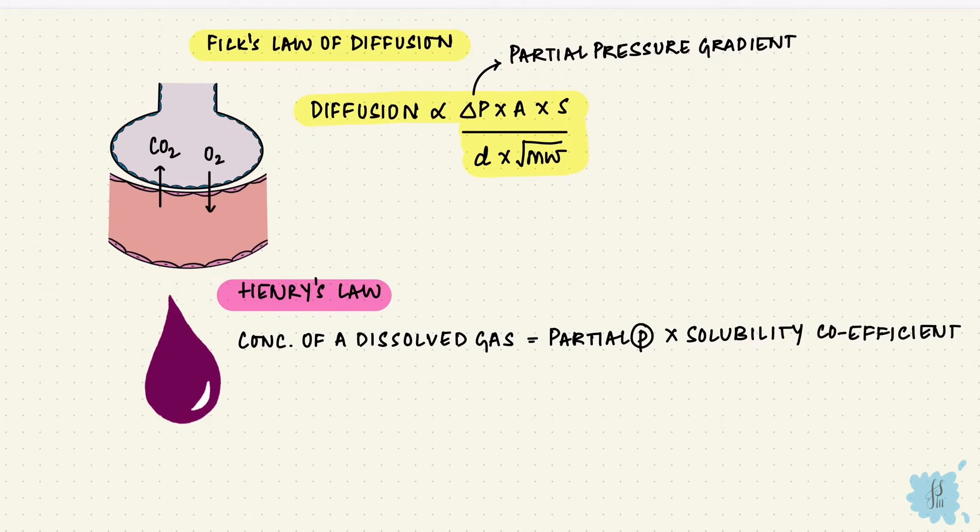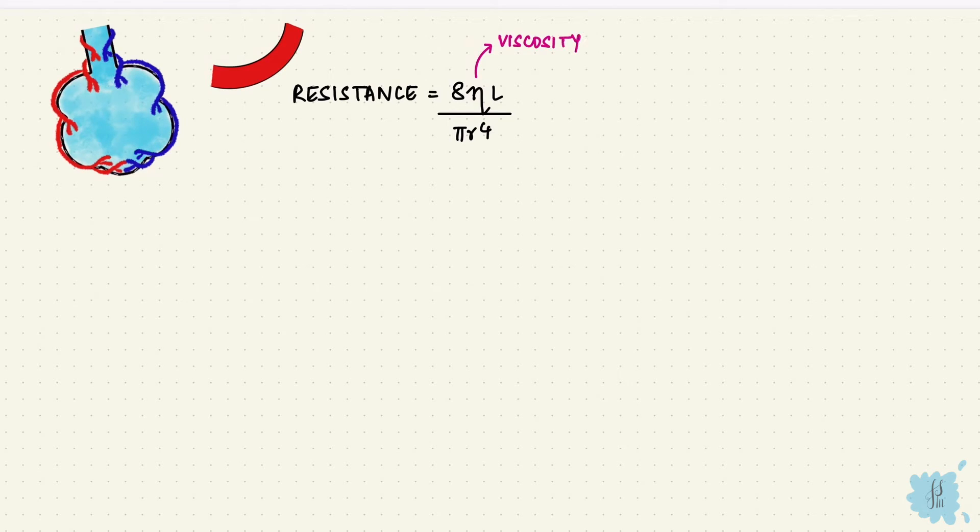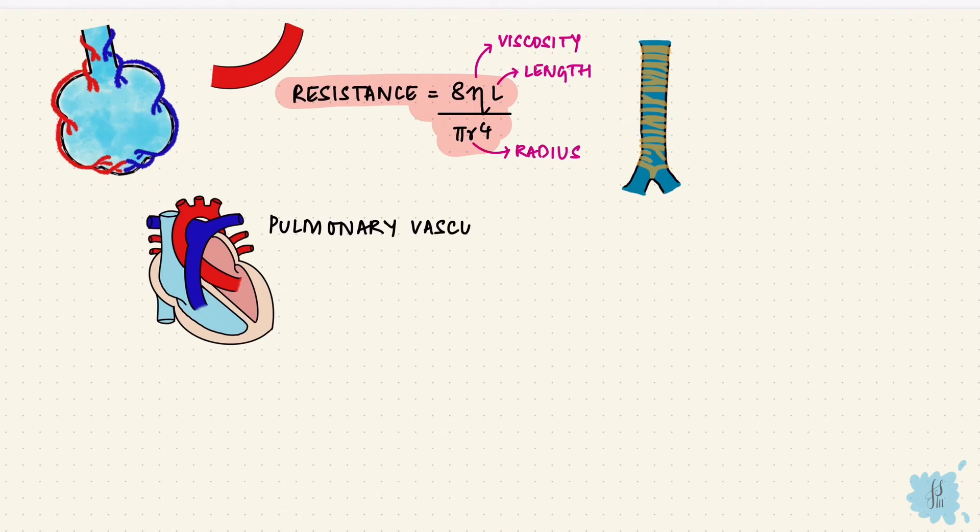All of this was about the ventilation portion in the lungs, but the lungs also have circulation and that has its own physiology too. The resistance of vessels is 8ηL over πr to the power of 4. η is the viscosity, L is the length, and r is the radius of the vessels. So it's the same as vessels elsewhere, and the same formula is also applicable to resistance in the airways. Pulmonary vascular resistance is the difference between the pressure in the pulmonary artery and the pressure in the left atrium over the cardiac output. That's because resistance is change in pressure over flow.